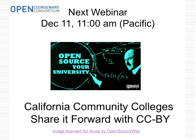I want to remind everyone of the next CCCOER webinar coming up on December 11th at 11 a.m. Pacific — note the 11 o'clock start time. We will be hearing from Barbara Olofsky and Cable Green on California community colleges sharing it forward with the CC BY license. California community colleges comprise 112 community colleges serving 2.6 million students — the largest single higher educational system in the world. For California community colleges to adopt an open policy is a big deal.